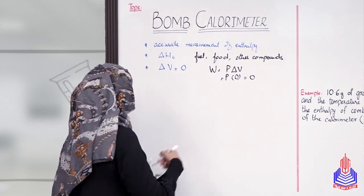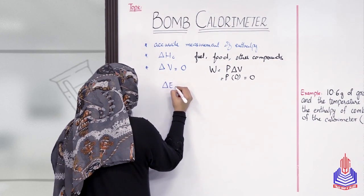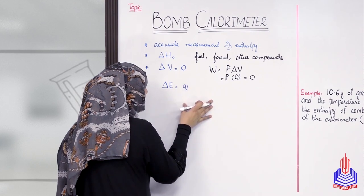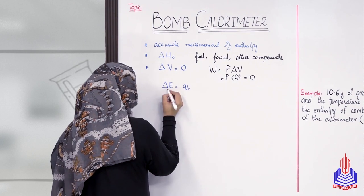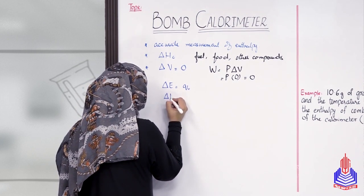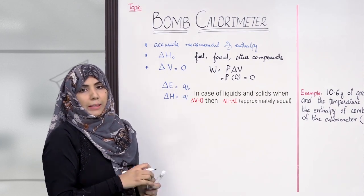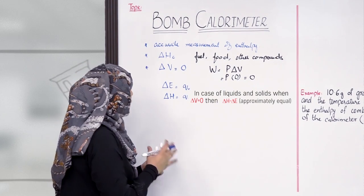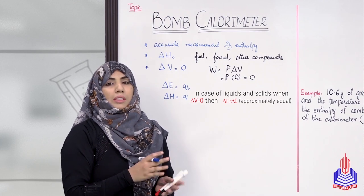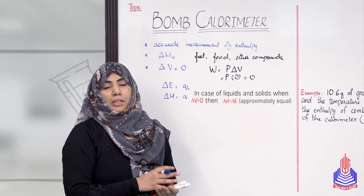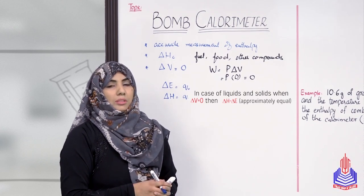क्यूंकि work done = pressure × change in volume, जब change in volume 0 होगा तो work done भी 0 हो जाएगा। अगर work done 0 होगा तो internal energy that will be equal to the heat supplied at constant volume, और internal energy will also equal to the enthalpy. आइए हम देखते हैं कि bomb calorimeter का क्या setup है, इसके कौन से parts हैं, और हम इसे किस तरह use करते हैं for the measurement of enthalpy of combustion.